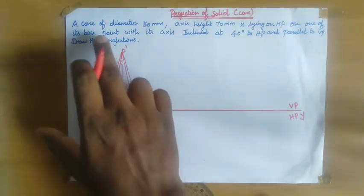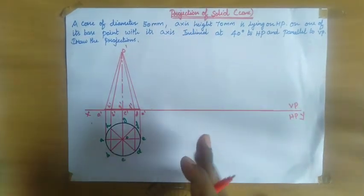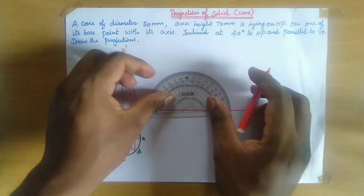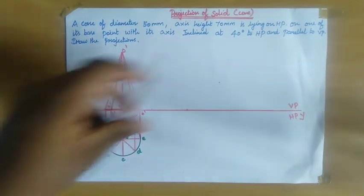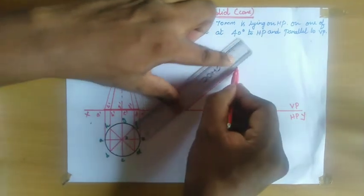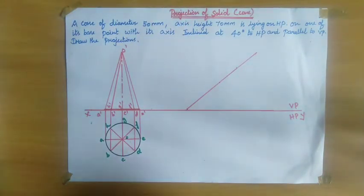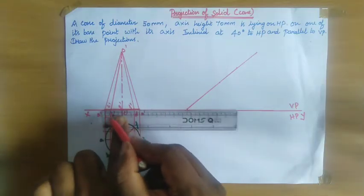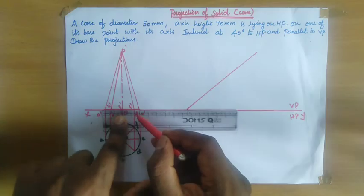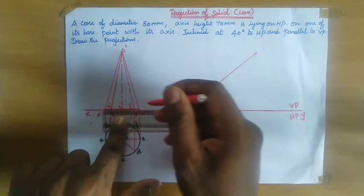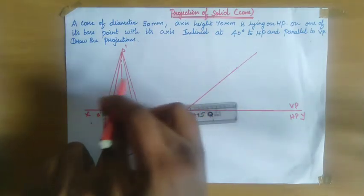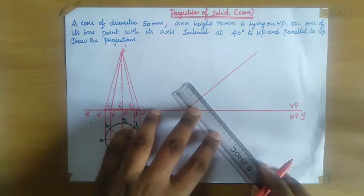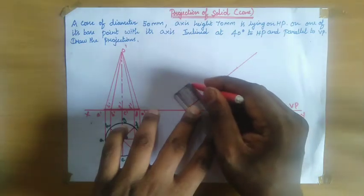We have developed the front view section and the top view section. Now, since the axis is inclined at 40 degrees to HP, take the measurement of the base of the front view section. The base is 50 mm — that is 4 cm. Split this equally: 20 mm on this side and 20 mm on this side.